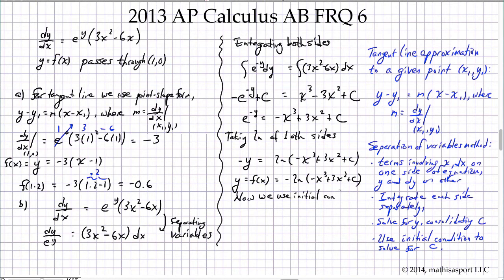Now we use the initial condition—I call it an initial condition, in the problem they're just calling it a point that the solution passes through, but it means the same thing. We know that y is 0 when x is 1, and so we write 0 = -ln(-1³ + 3(1)² + c).